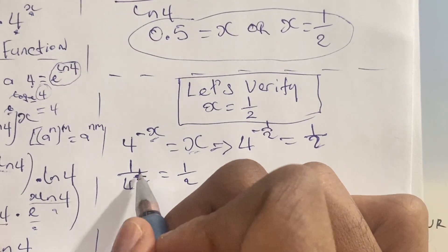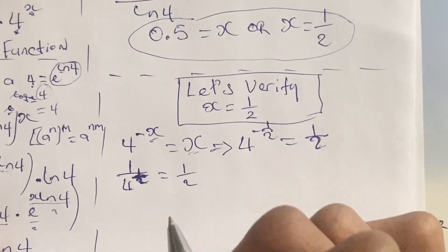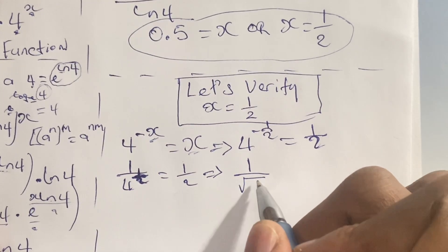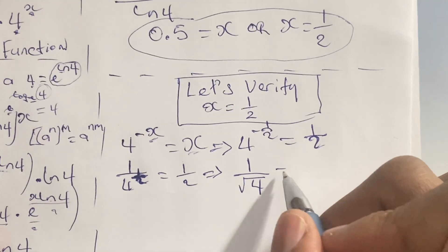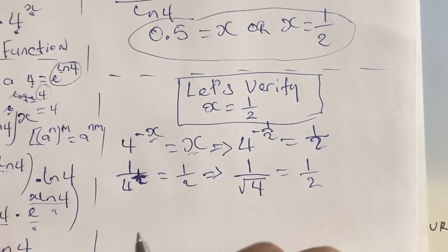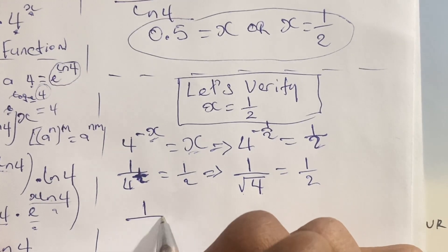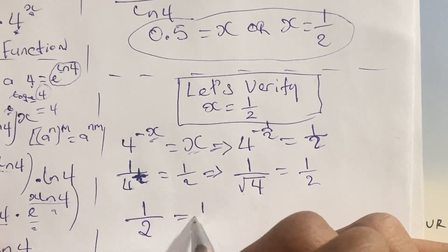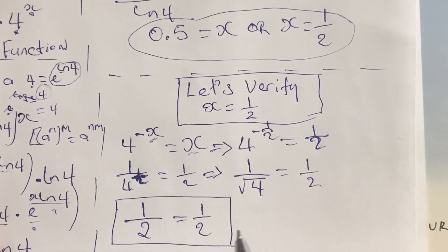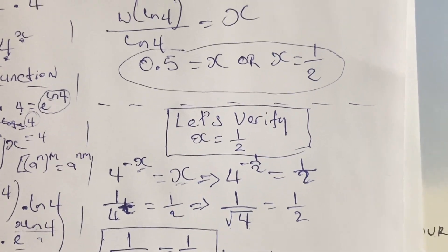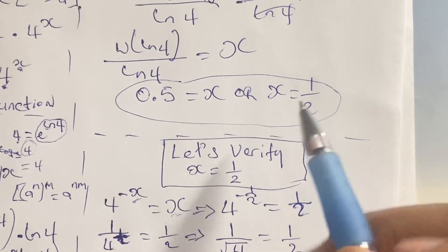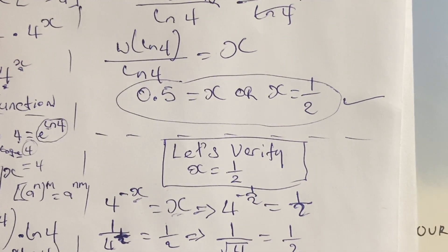And of course this is equal to one half. We know that when we have a fraction as an exponent, the denominator represents the root, so 4 to the power of one half is the square root of 4. The square root of 4 is 2, so we have 1 over 2 is equal to one half. One half equals one half — and so there we have it. Our solution of x is therefore verified: x is indeed equal to one half, or 0.5.